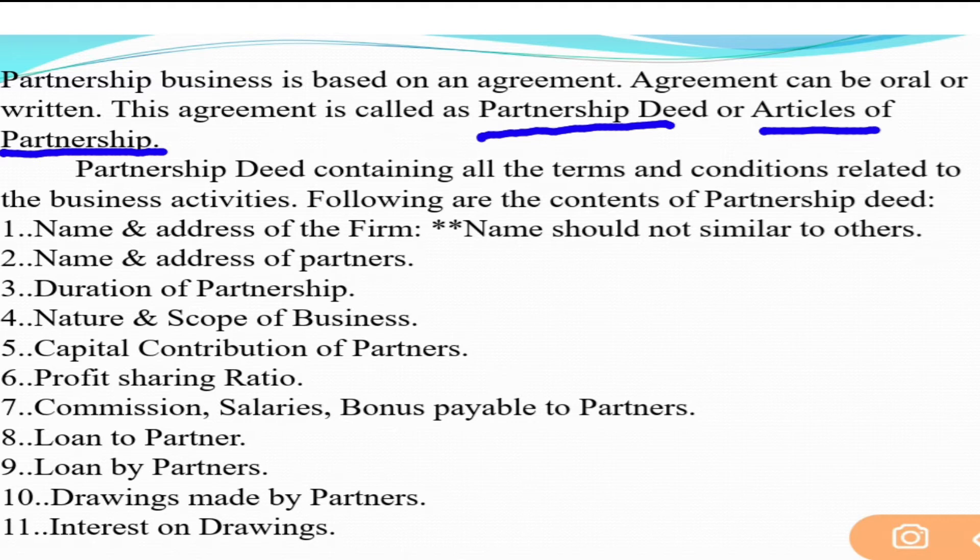When two, three, four people come together to do business, they decide certain terms and conditions among themselves beforehand — that is the partnership deed. Let us discuss the contents of the partnership deed one by one. First: name and address of the firm — what is the firm's name and what is its address.